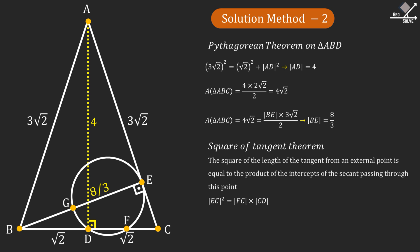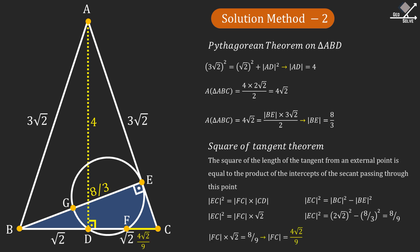Applying this to our problem, we will have EC squared equals FC times CD. From here EC squared equals FC times square root of 2. Now if we apply the Pythagorean theorem on the shaded triangle, we will have EC squared equals BC squared minus BE squared. From here EC squared will be equal to 8 over 9. From these two equations, FC can be calculated as 4 times square root of 2 over 9. And from here we can find BF as BC minus FC, which gives 14 times square root of 2 over 9.